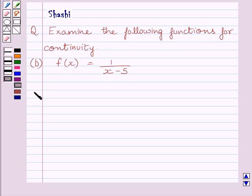Let us now start the solution. We are given f(x) is equal to 1 upon x minus 5. Clearly we can see, the function is not defined for x is equal to 5.